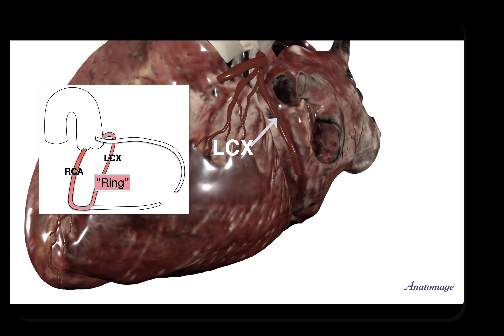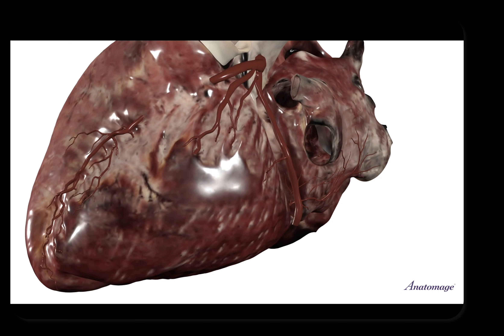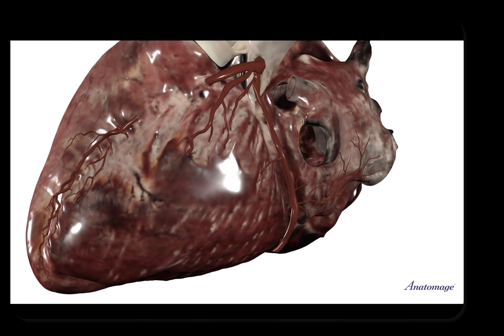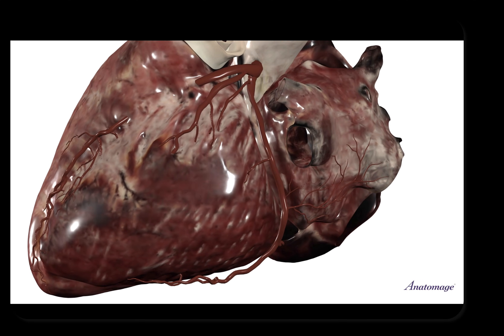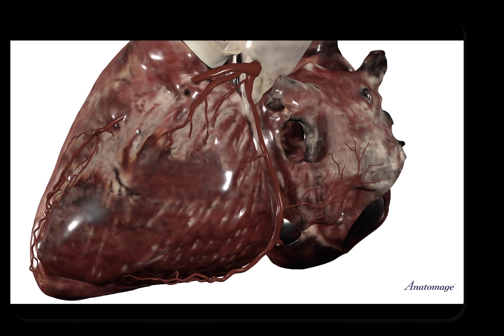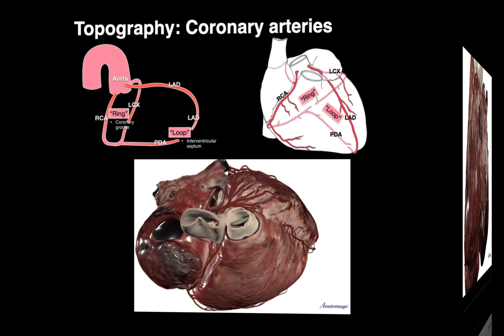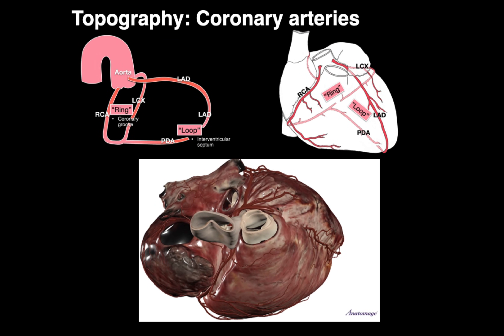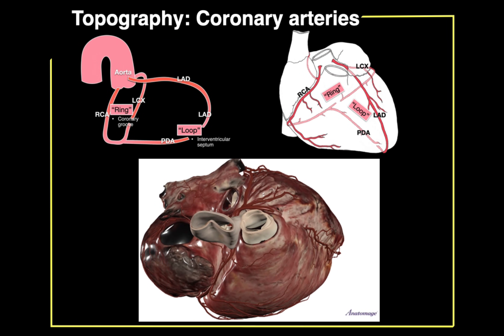Remember the loop and the ring. The left circumflex is going to supply the lateral and posterior walls of the left ventricle, and here it courses down to supply the posterior wall of that left ventricle. That, my friends, is the topography of coronary arteries in a nutshell.